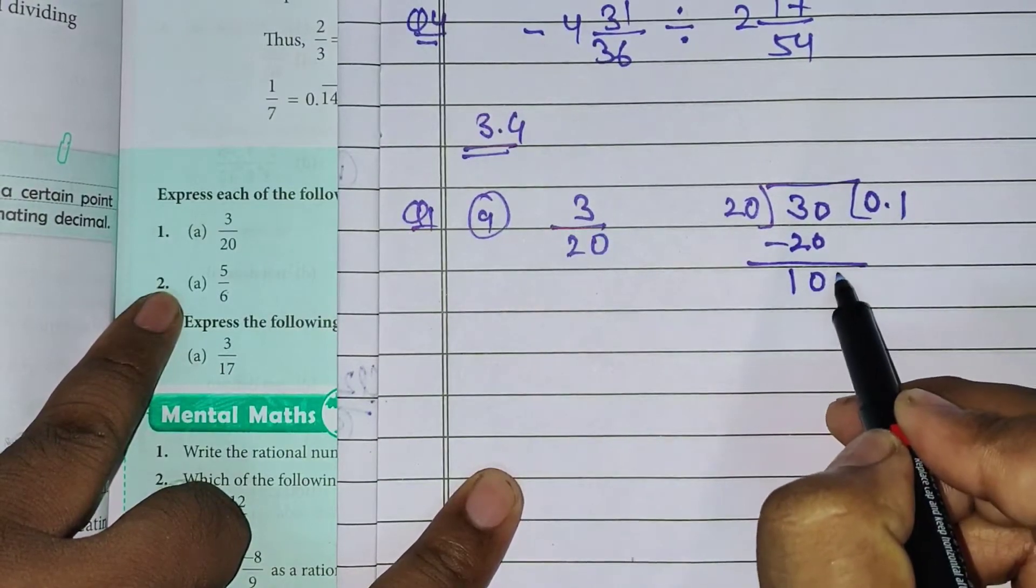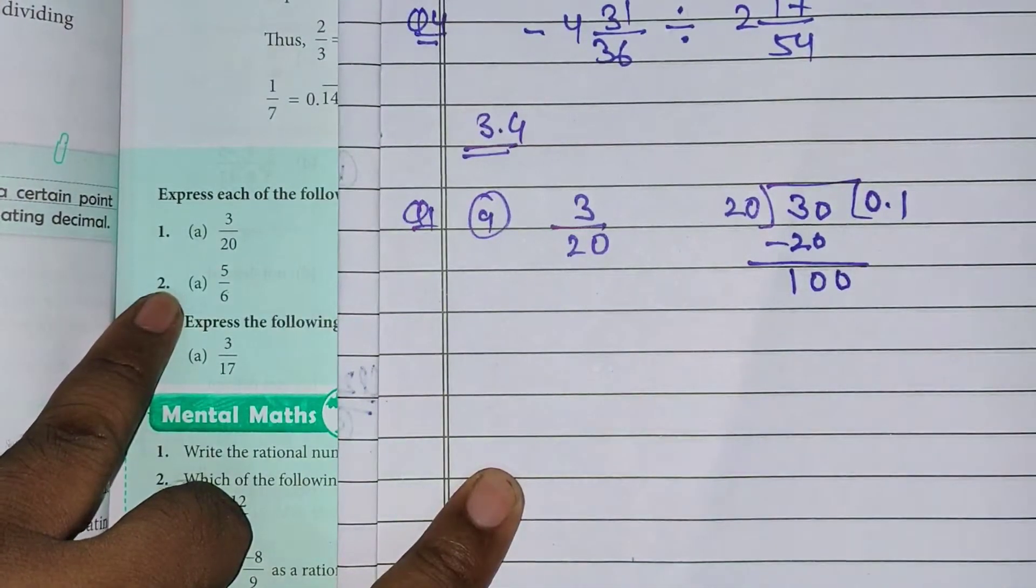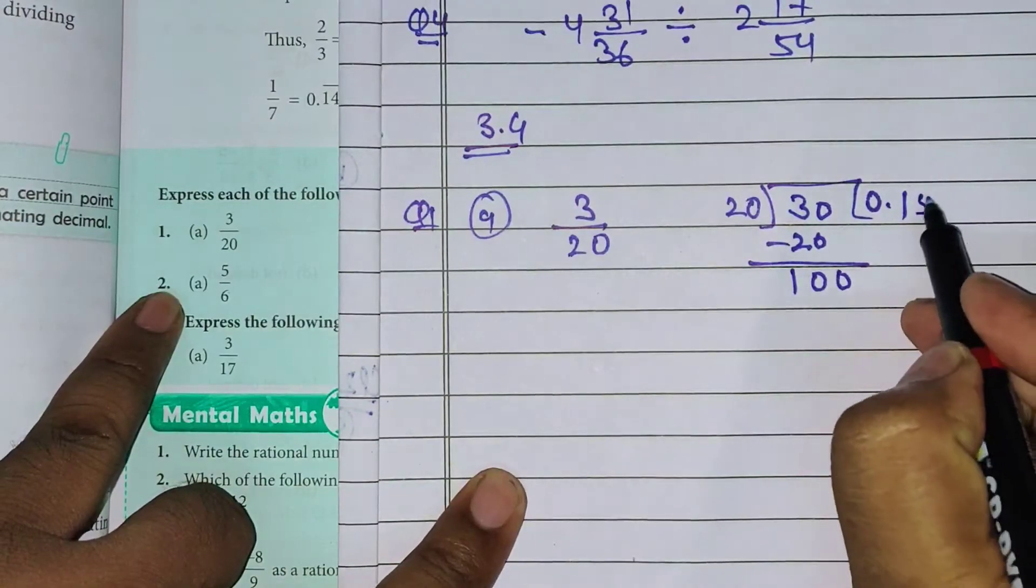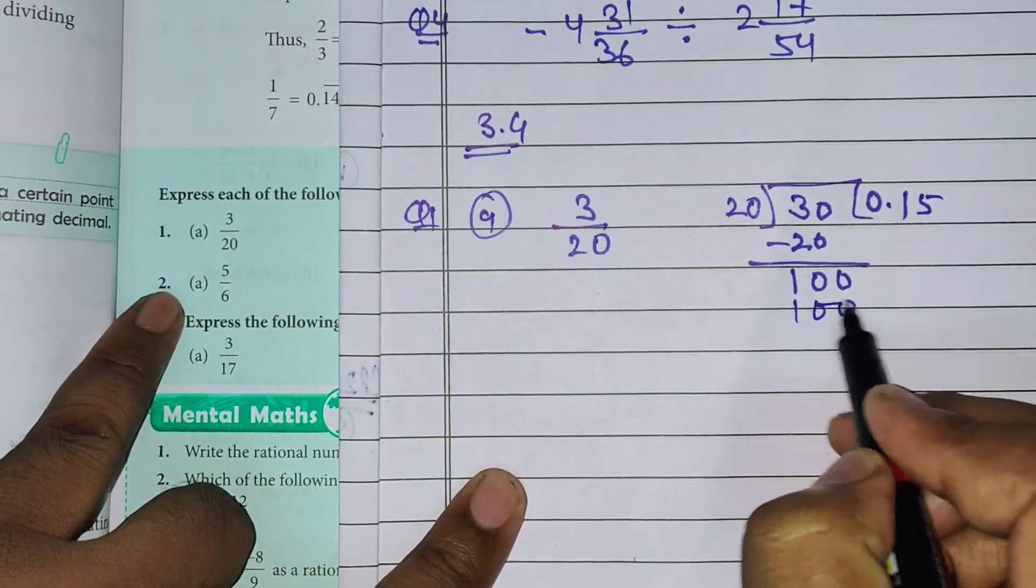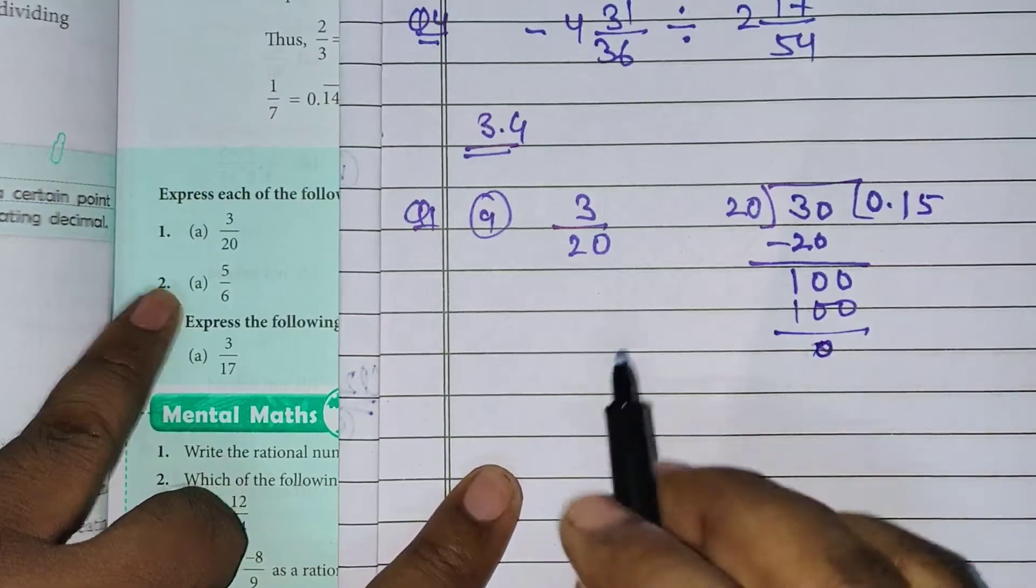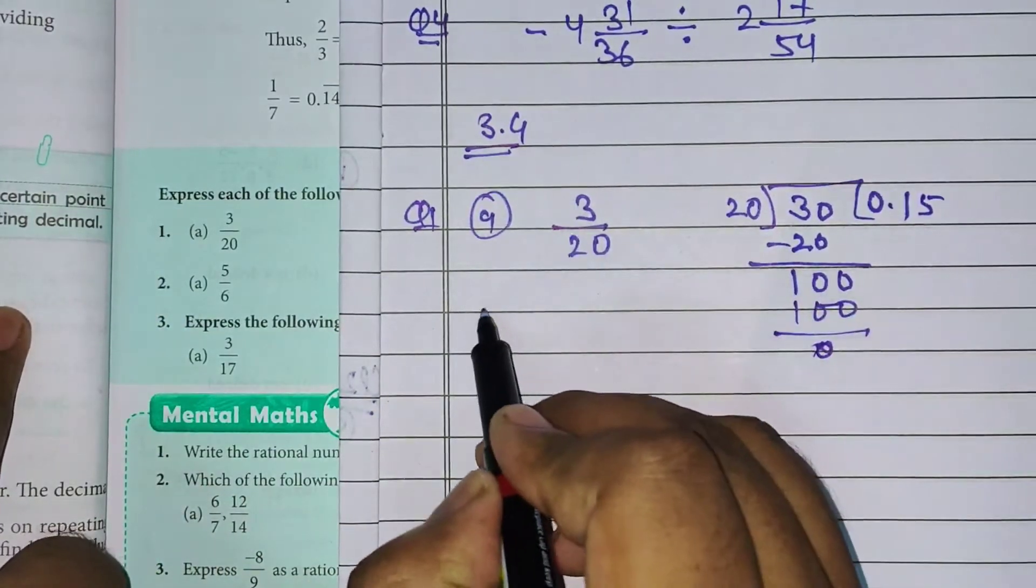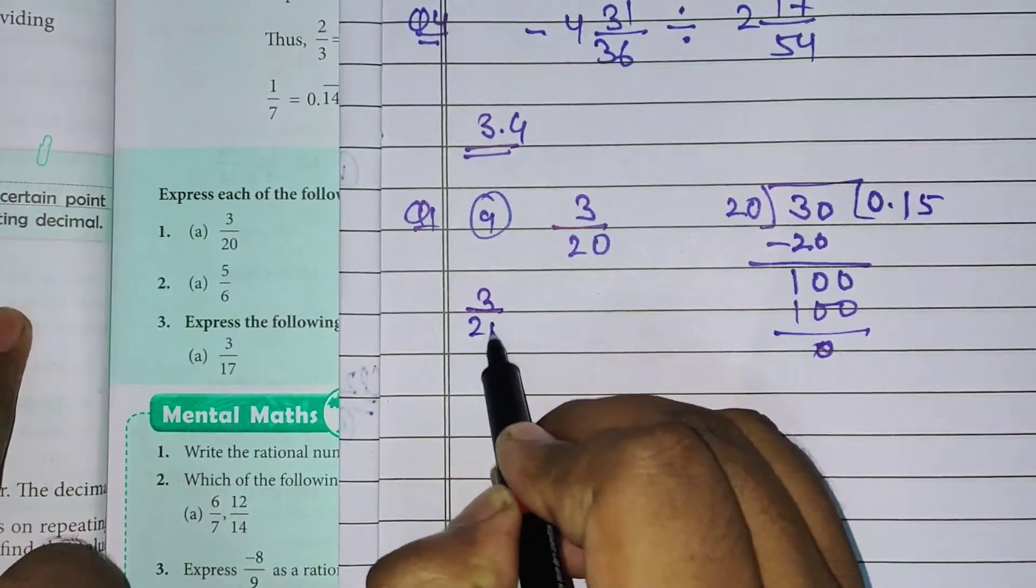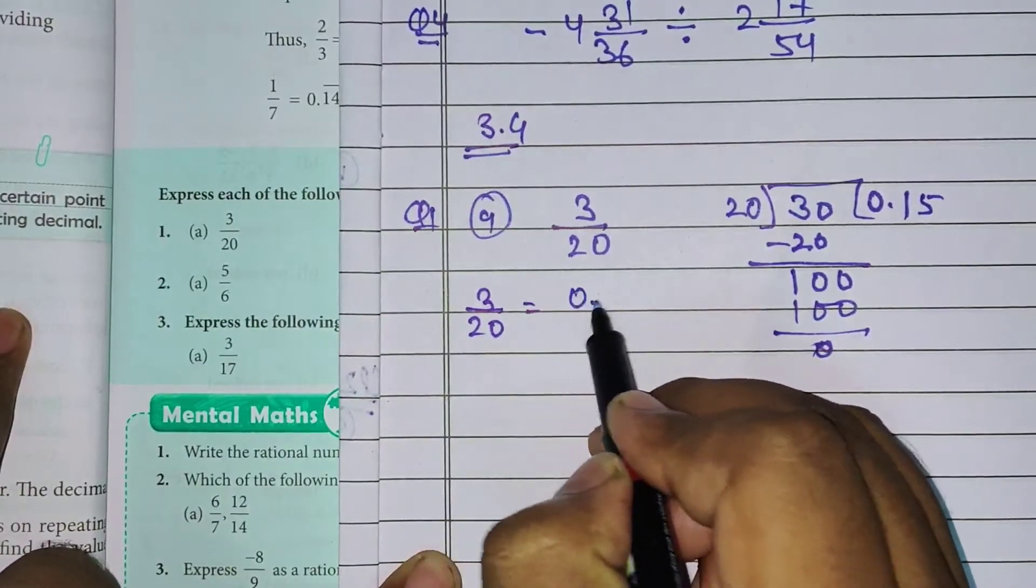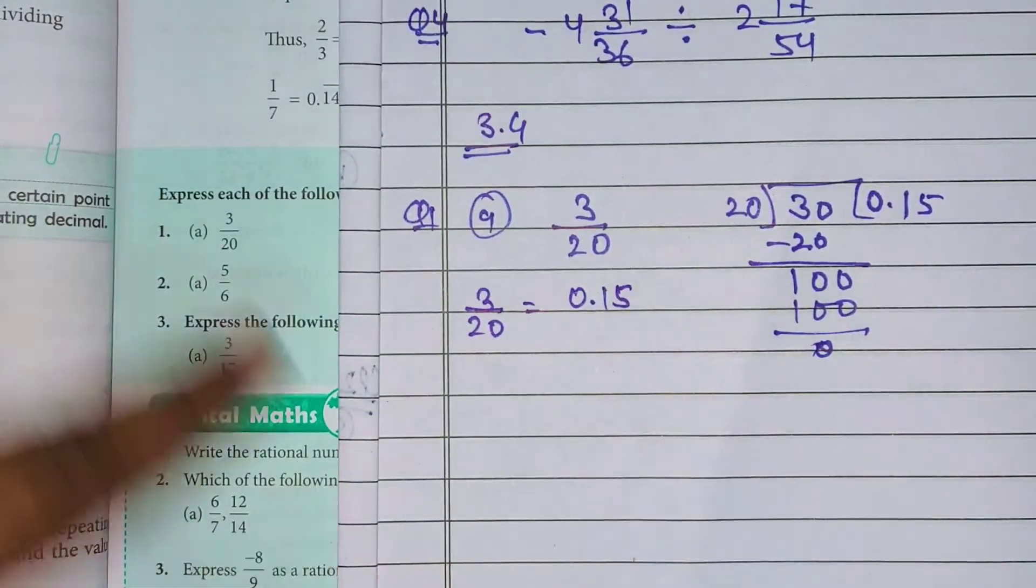Yahaan decimal already hai, so 1 or 0 yahaan place ho jayega. So 20 5 jaha 100. Yahaan maara kya bachos remainder? 0. It means we can say 3 upon 20 is equal to 0 decimal 15.